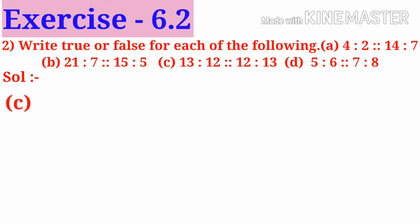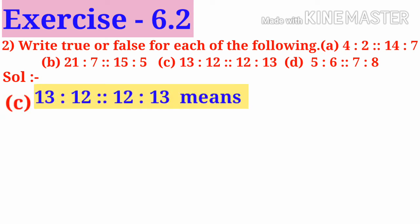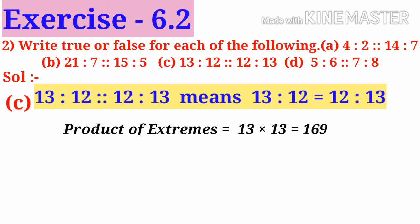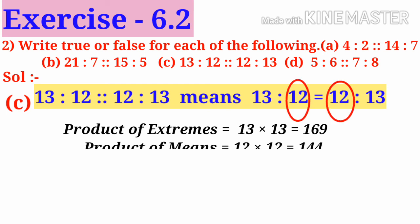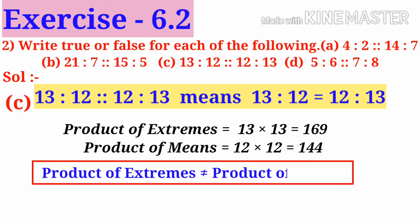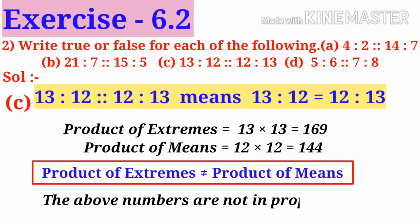C: 13 is to 12 is as 12 is to 13, meaning 13 is to 12 is equal to 12 is to 13. Take the extreme values 13 and 13. Take the product: 13 into 13 is 169. Take the product of middle terms: 12 into 12 is 144. Both values are not equal. So product of extremes is not equal to product of means. So the above numbers are not in proportion.